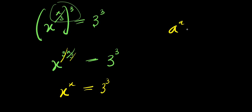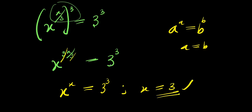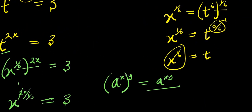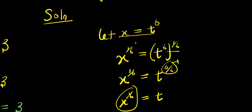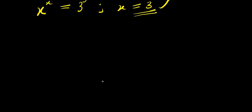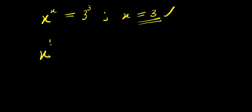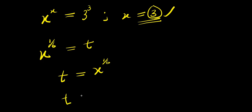Now if you have a to the power of a equals b to the power of b, that means a equals b. So from here I have x equals three. Now let's solve for t. Recall x equals t to the power of six, that means x to the power of one over six equals t. So t equals x to the power of one over six, and our x is three. That means t equals three to the power of one over six.